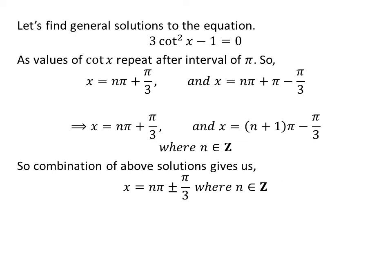So the union of these two solutions gives us the general solutions to the equation 3 times square of cotangent of x minus 1 is equal to 0 as n times pi plus or minus pi upon 3, where n is an integer.